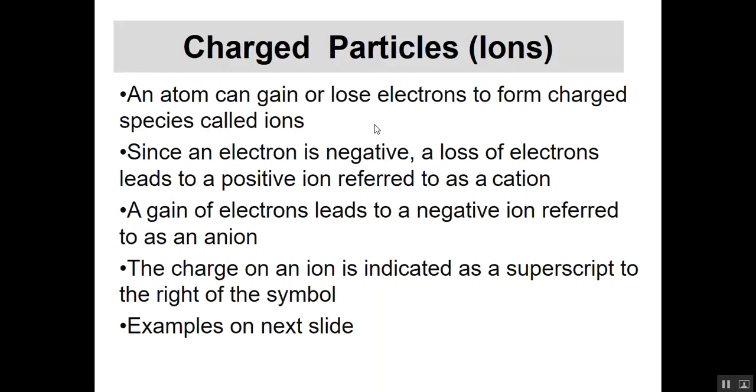If I remove electrons, because they're negative, the charge becomes positive. If I add electrons to an atom, it will have a negative charge because of extra electrons. This thing we form when we move electrons is called an ion. Losing electrons leads to a positive ion called a cation. Gaining electrons leads to a negative ion called an anion.